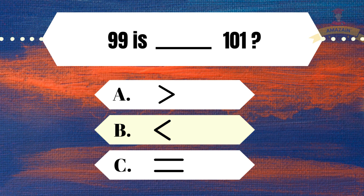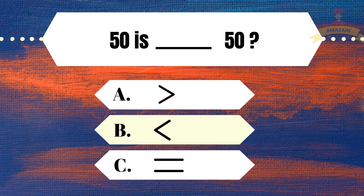99 is: A) greater than, B) less than, C) equal to 101. And the answer is B, less than. 50 is: A) greater than, B) less than, C) equal to 50. And the answer is C, equal.